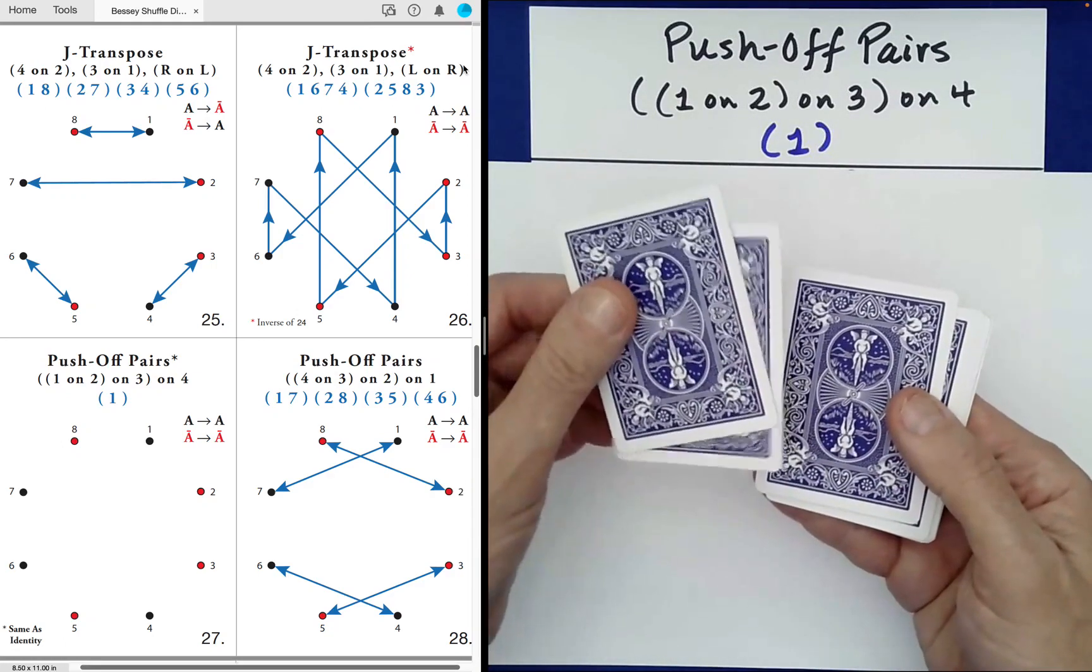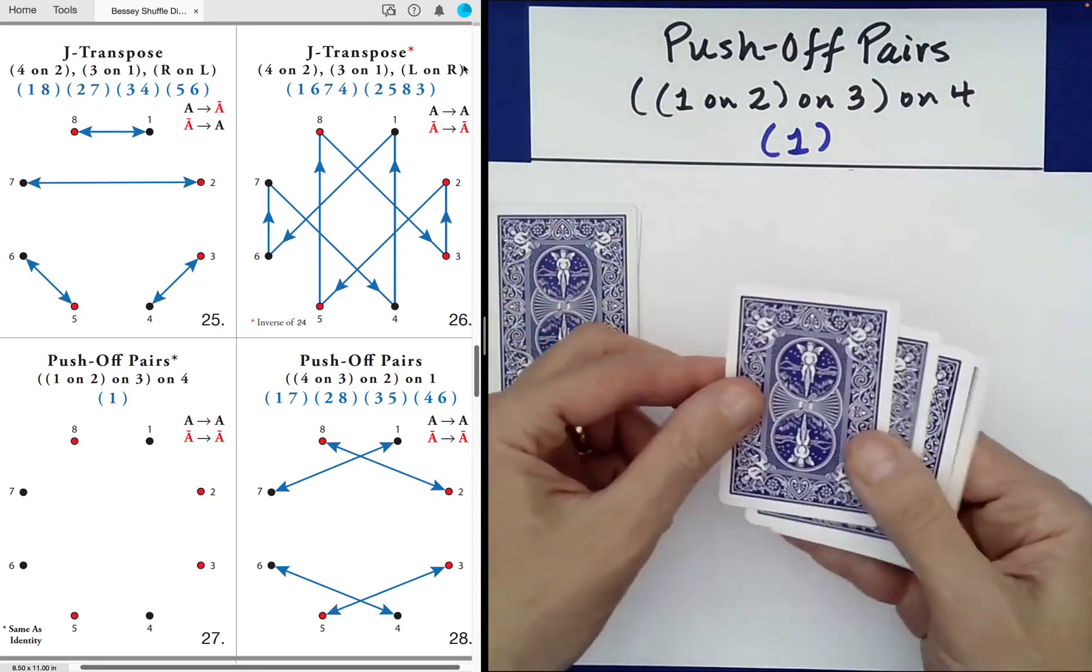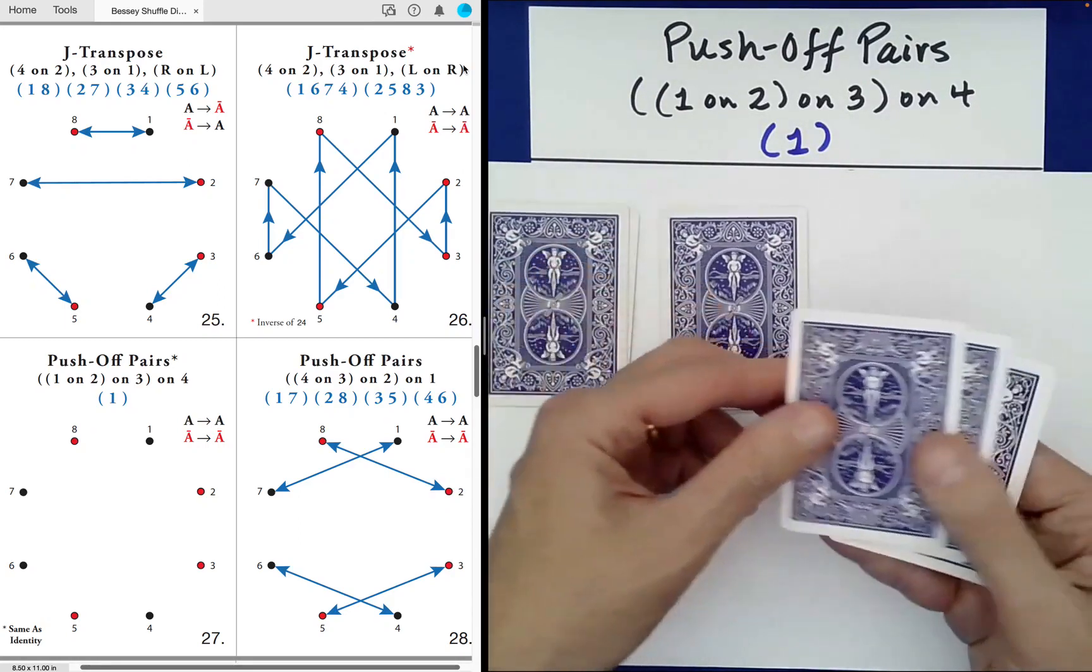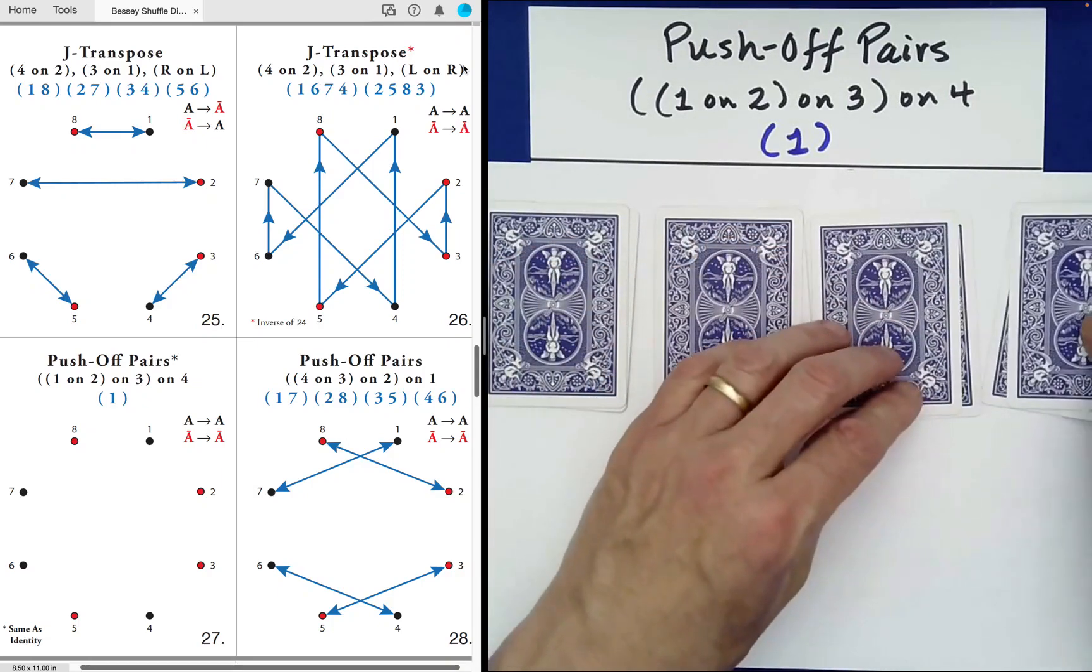You don't change the relative order of these two cards, and you just set them down like that. You push off the next pair like that, push off the next pair like that, push off the next pair, set it down.